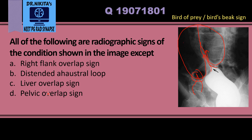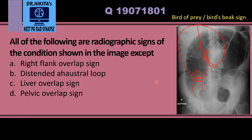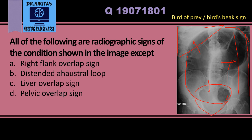So the condition is sigmoid volvulus, and we need to know what radiographic signs are seen in it. Looking at a radiographic image of sigmoid volvulus, we see the dilated bowel loop with its apex under the left hemidiaphragm — that is one sign. It overlaps the descending colon, giving the left flank overlap sign (not the right flank overlap sign). It overlaps the liver, giving the liver overlap sign, and it converges in the pelvis, giving the pelvic overlap sign.